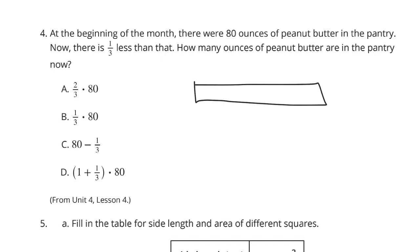I visualize this as just a tape diagram. And this was my 80 ounces. We have one-third less than the 80. So, that means I have two-thirds of the 80 left. And that's what we have here in A. Two-thirds of the 80.